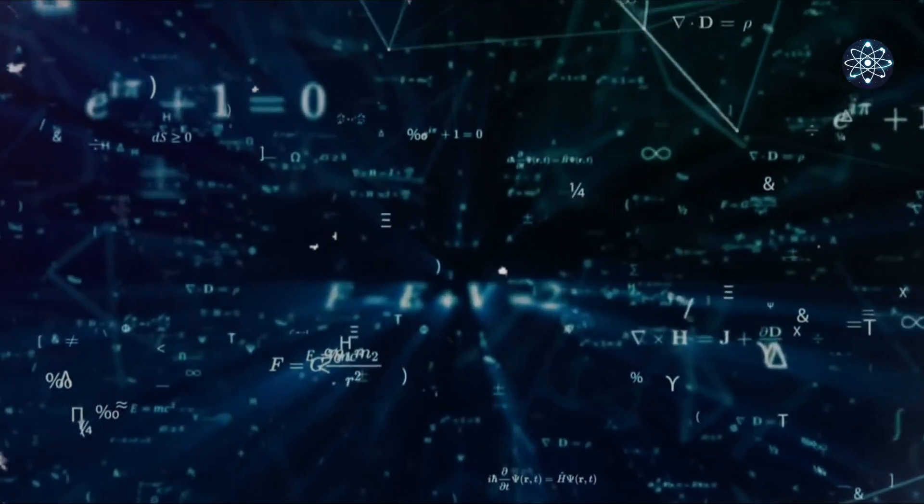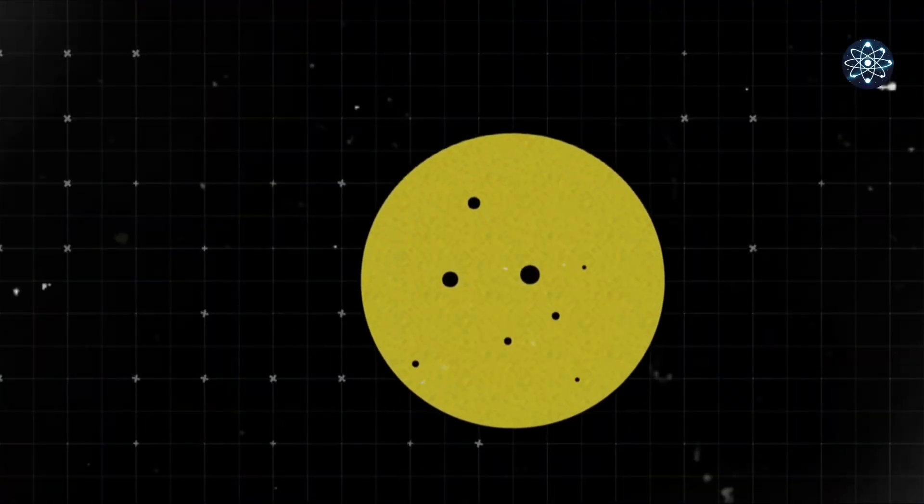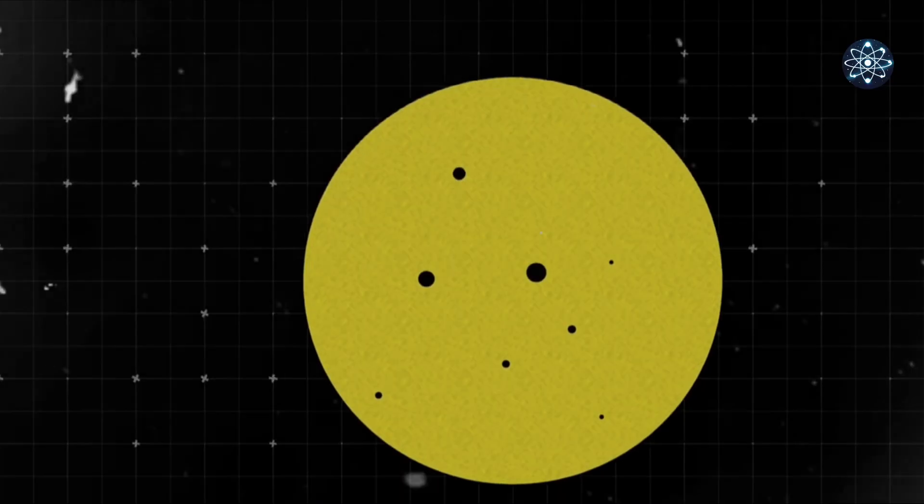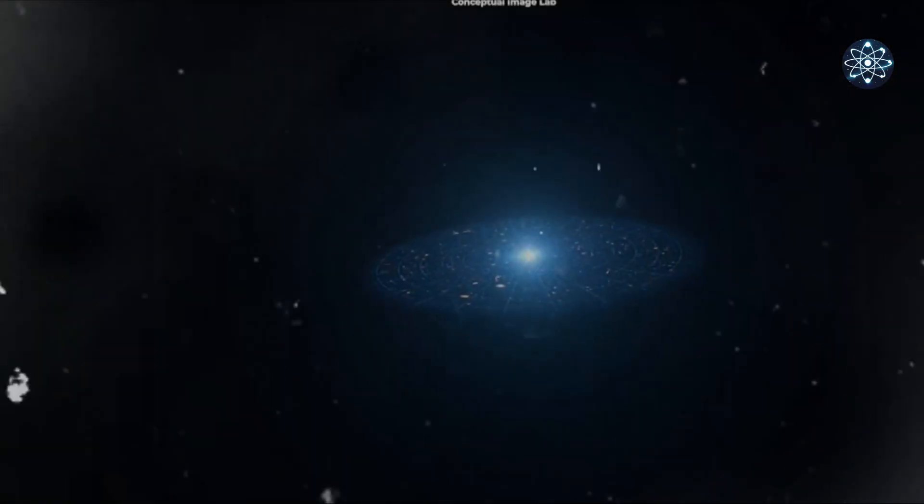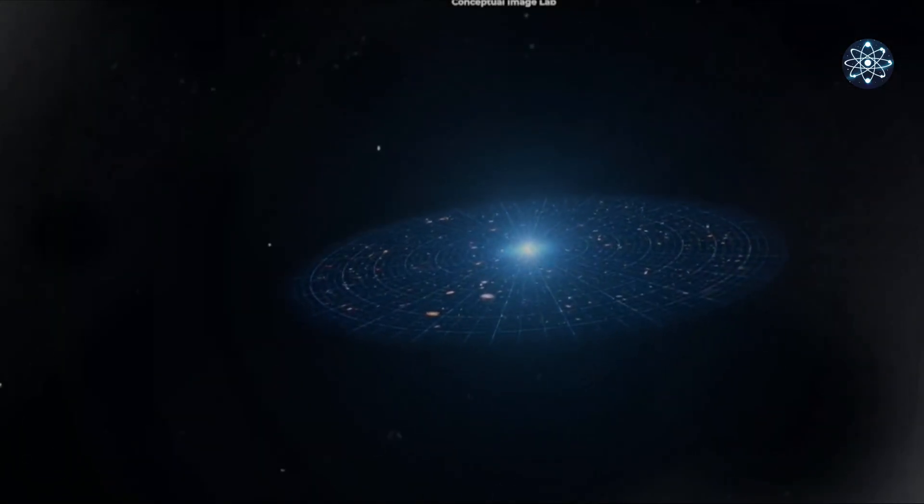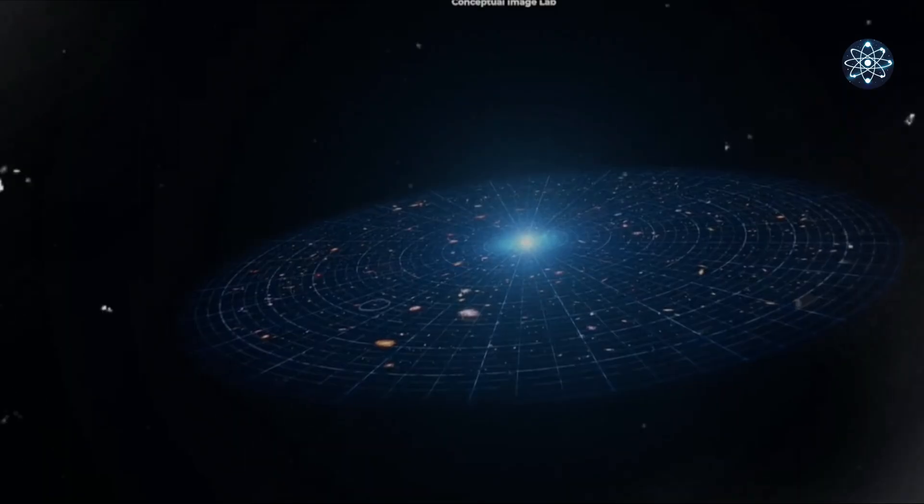We receive light from only a fraction of all stars. And even that light gets redshifted and loses energy along the way. That's why the night sky isn't flooded with light. That's why the universe appears black.